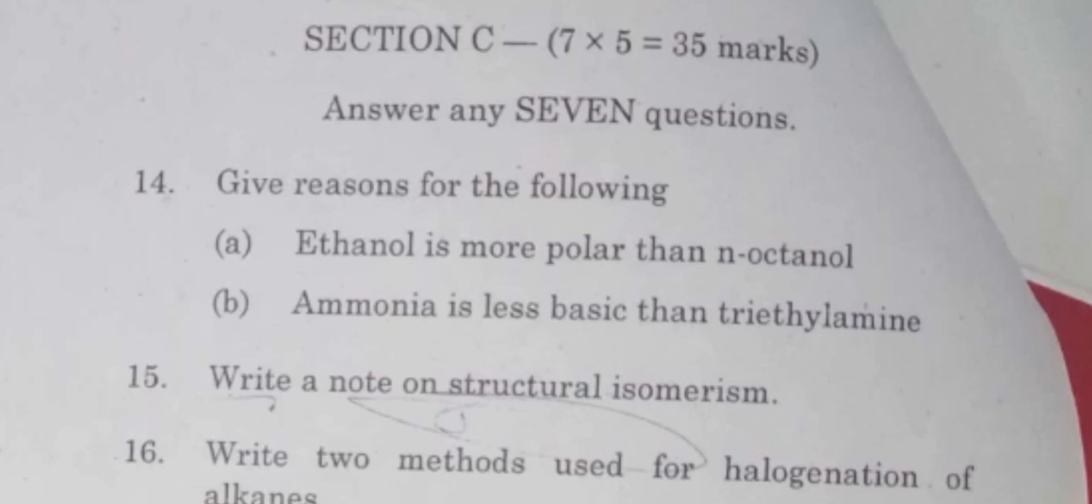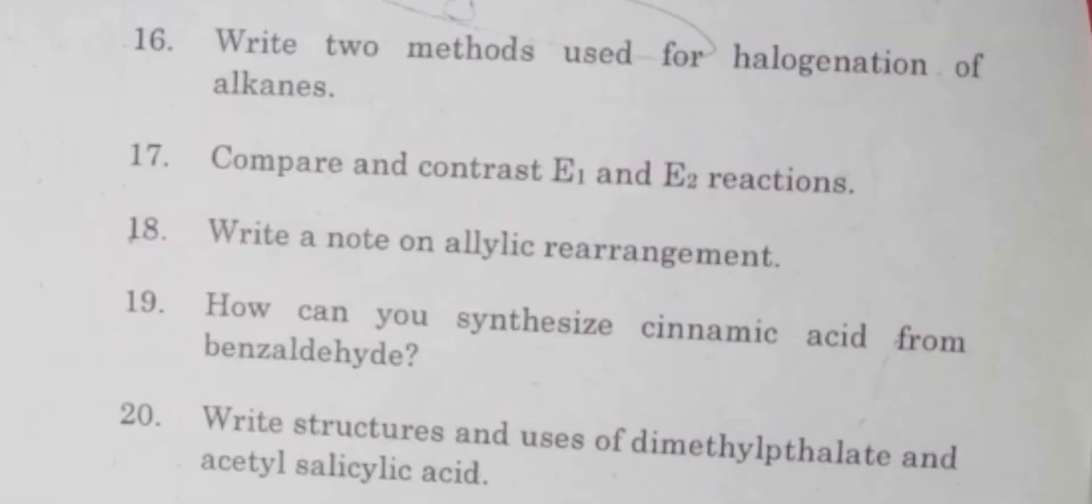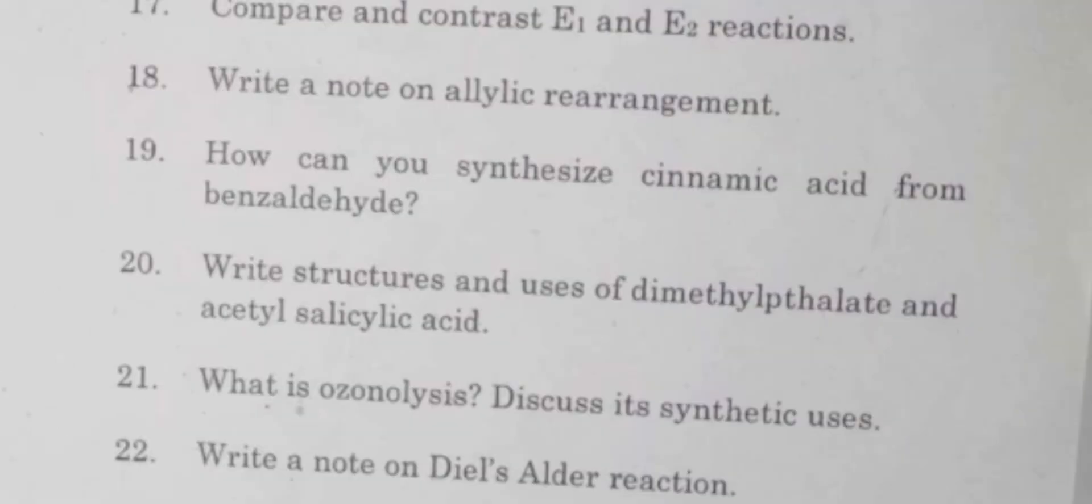Write a note on structural isomerism. Write two methods used for halogenation of alkanes. Compare and contrast E1 and E2 reactions. You can compare and contrast SN1 reactions and SN2 reactions as well.